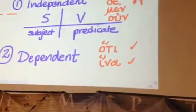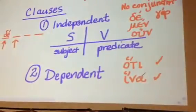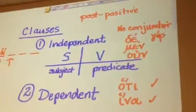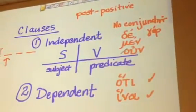So a hati or a hina at the beginning of the clause will indicate a dependent clause, and no conjunction, or one of these post-positive conjunctions, will usually represent an independent clause.